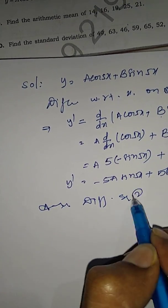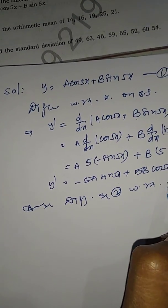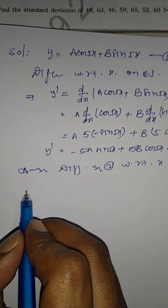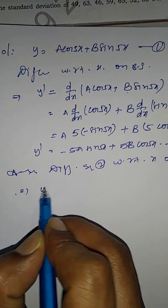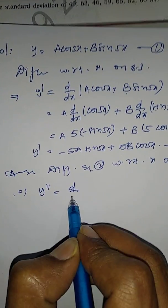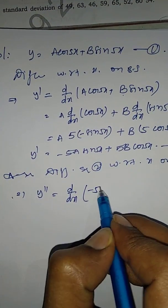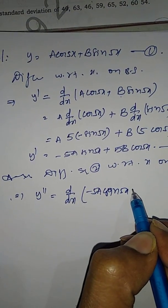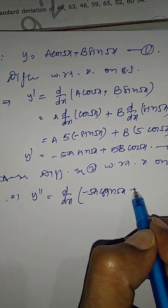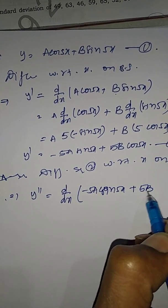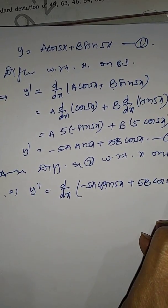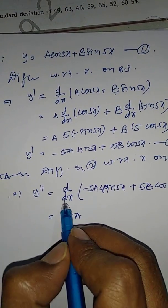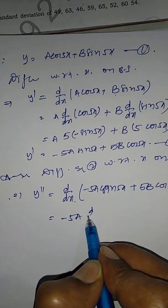Again differentiate equation number two with respect to x on both sides. y'' = d/dx of (−5a·sin(5x) + 5b·cos(5x)). Since −5a and 5b are constants, we take them outside.